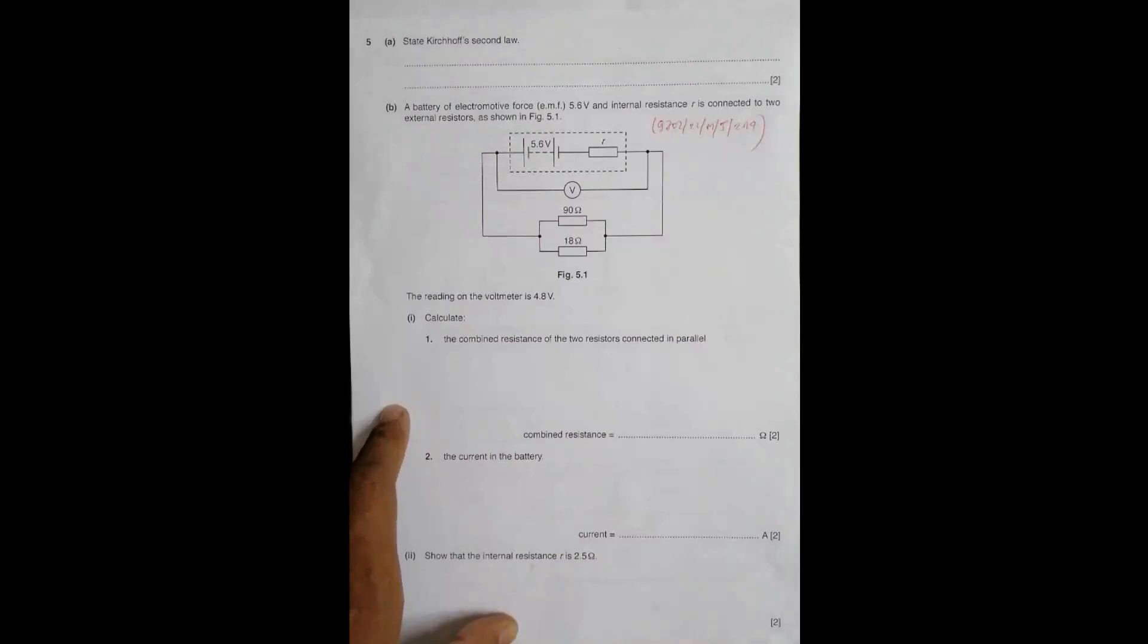Hello folks, this is 2019 May-June paper 22, question number 5. The question is related to circuits. The first part asks us to state Kirchhoff's second law, which is simply: for a closed circuit or loop, the sum of EMFs is equal to the sum of potential differences.